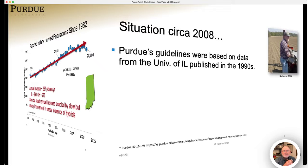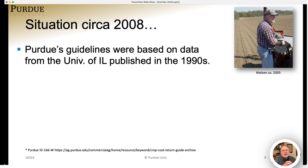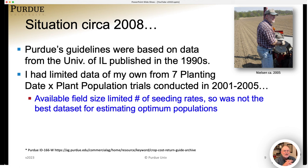In 2008, Purdue's guidelines for seeding rates and plant populations were largely based on data generated at the University of Illinois in the 1990s. By 2008, we were looking at upwards of 15 years since that data was published, so it was about time to revisit it. I had conducted a few trials from 2001 to 2005 that included plant populations, however the available field size limited the number of seeding rates, making it not a good dataset to use for revised guidelines.